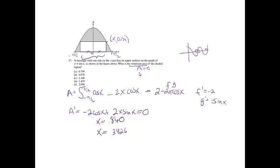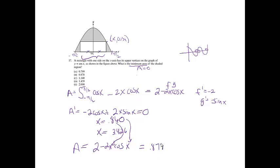To find the minimum area, I plug those back into the area formula: 2 minus 2x cosine x. I plugged in 0.860 for x and got 0.878. When I plugged in 3.426, it gave a quite a bit bigger answer. So the minimum area is 0.878, which is choice B.